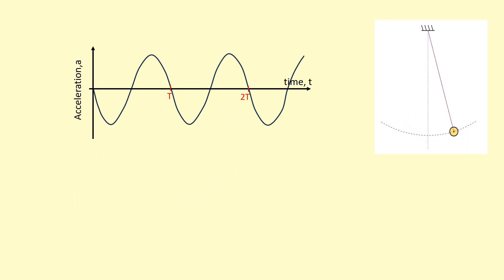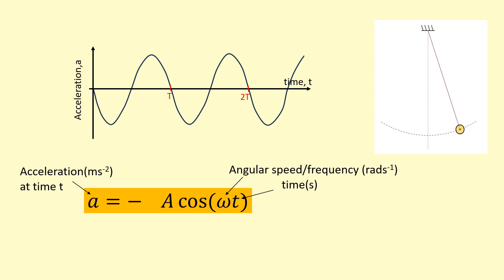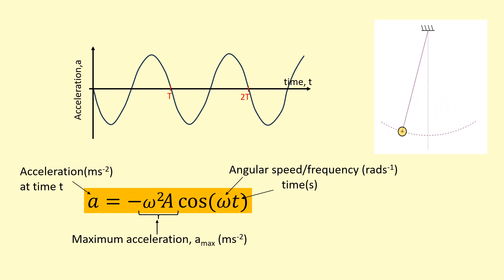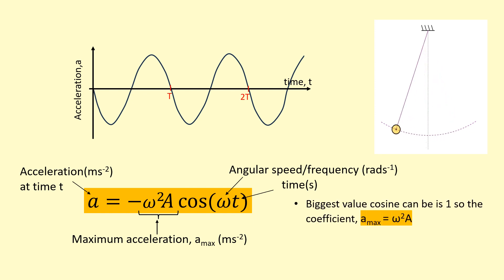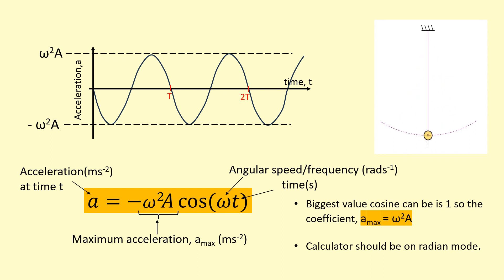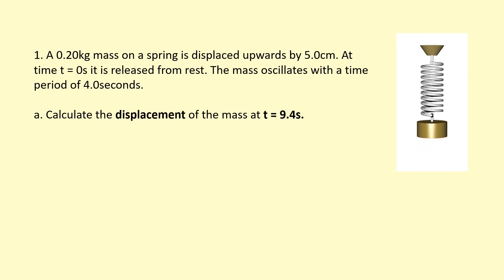There's an equation for acceleration as well: a = -ω²A cos(ωt). The minus sign appears, and because we differentiated twice from the displacement, two factors of ω come out, giving ω squared. The largest value cosine can take is one, so ω²A is the maximum acceleration. You can read this from the graph — the biggest value on the y-axis is ω²A. Remember to use radian mode with this equation too.